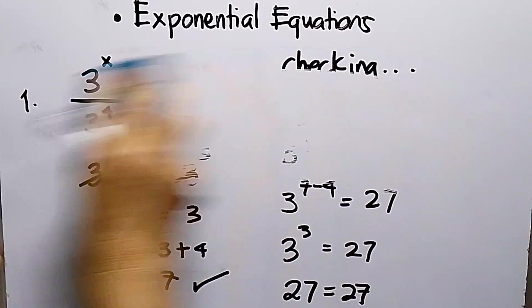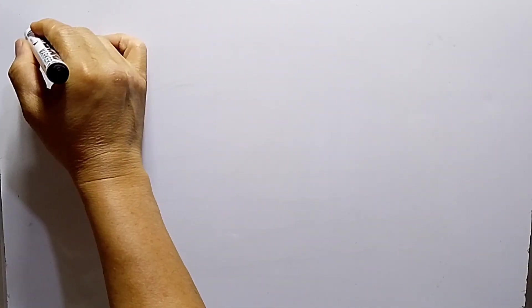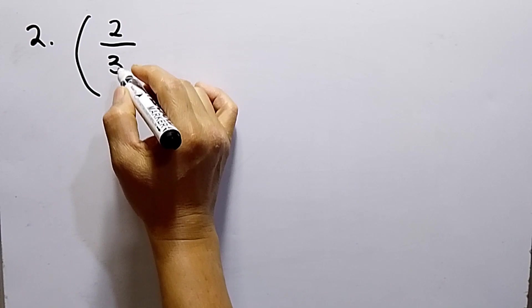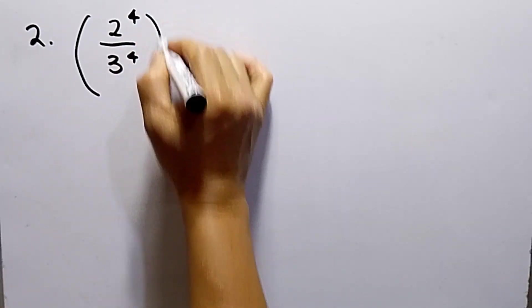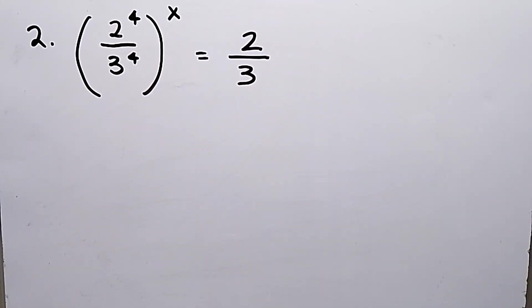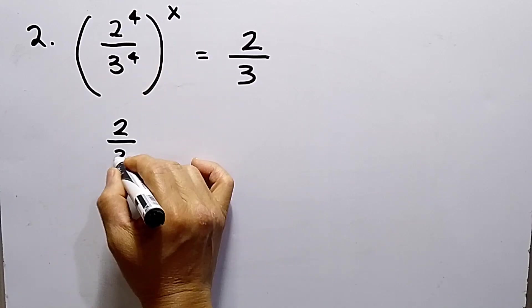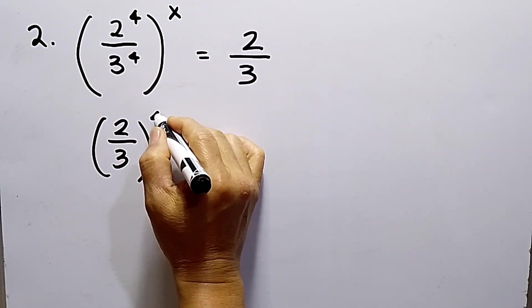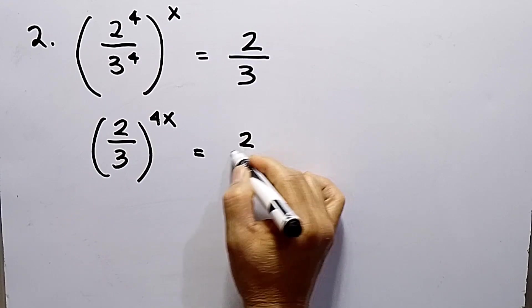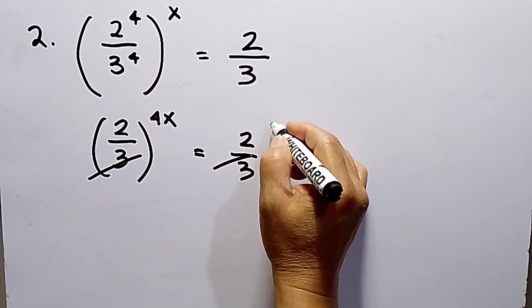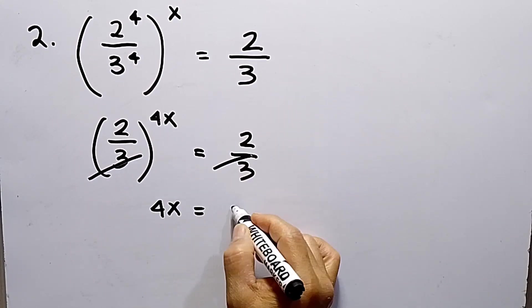Let's proceed to number 2. I have here (2/3) raised to the 4th power, then the whole thing raised to the x equals 2/3. I can write this as (2/3) with the 4 moved outside, so 4 times x equals 2/3. Take note — same base, so the bases cross out. Also take note there is a 1 as the exponent here. So this gives us 4x equals 1.